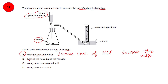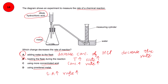Looking at the other options: heating the flask means increasing temperature, and an increase in temperature increases the rate of reaction, so that cannot be right. Using more concentrated acid increases the concentration, so the rate also increases. Using powdered metal increases surface area, and if surface area is increased, the rate also increases. So the only option that applies is option A.